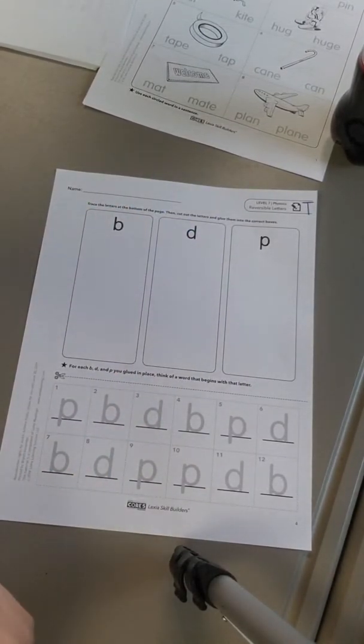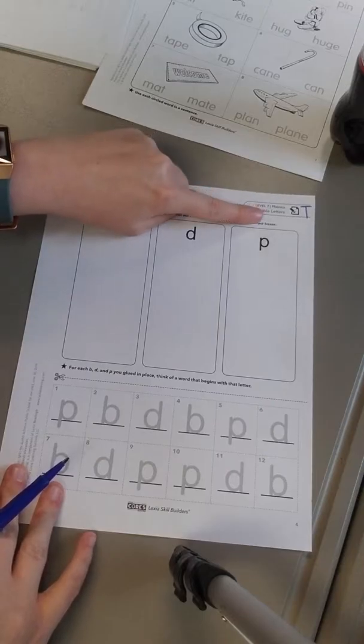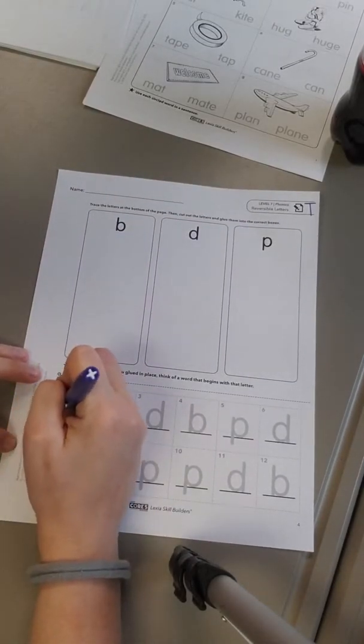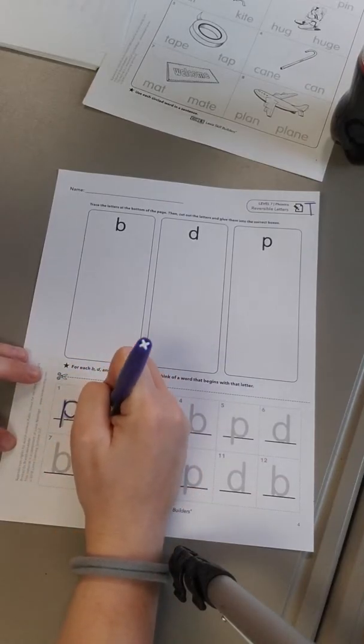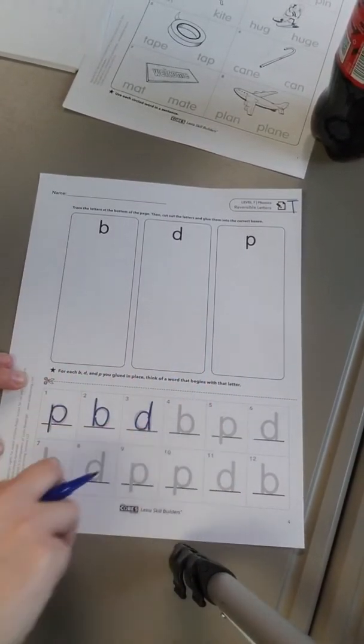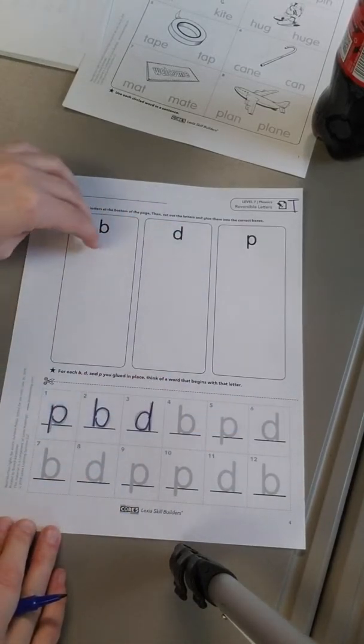The instructions say trace the letters at the bottom of the page, then cut out the letters and glue them into the correct boxes. So you're going to trace each letter just like this all the way across. Then you're going to cut them out and match them up to where they go.